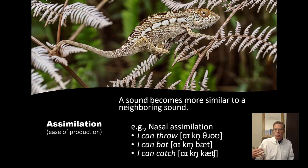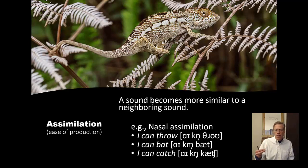'I can bat' is probably the more common way of saying it. In careful speech you can say 'I can bat', but most people don't say it that way. Or if it's a velar, like 'catch', you're probably going to say it with an NG sound instead: 'I can catch'. You could say 'I can catch', but that's going to be less common.